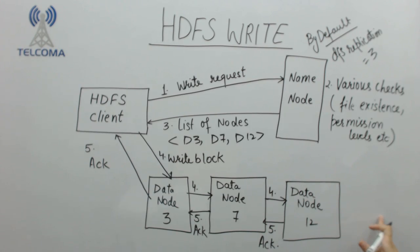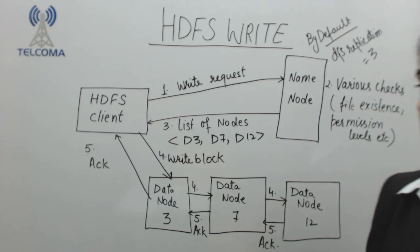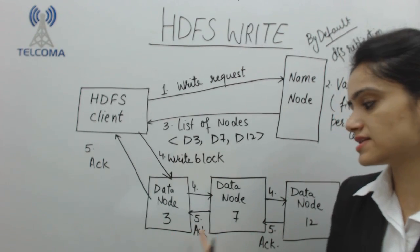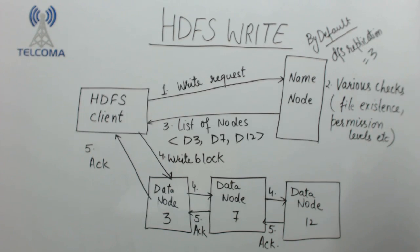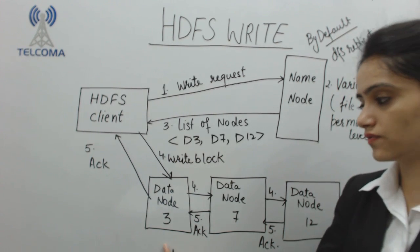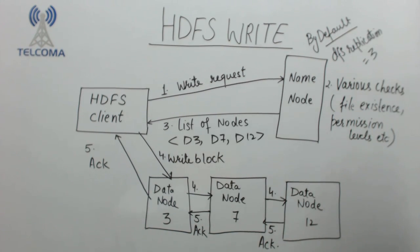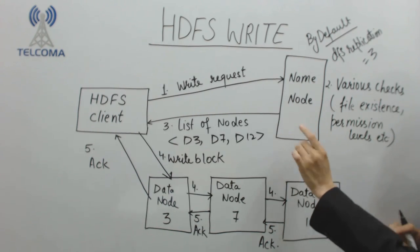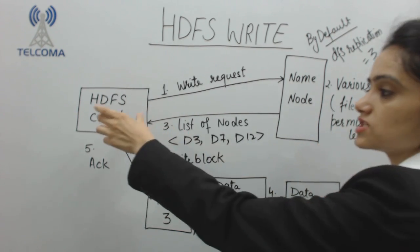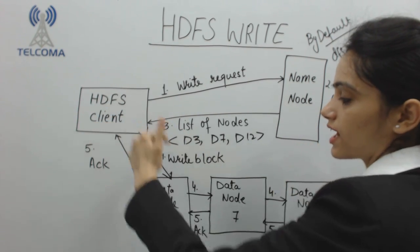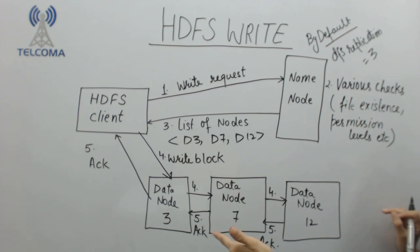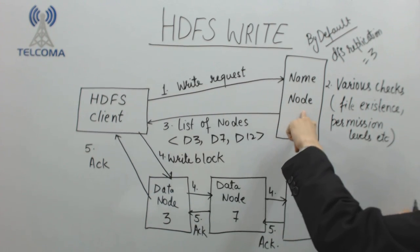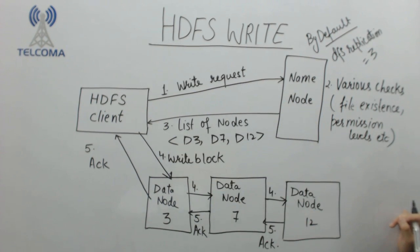This is the procedure for writing data on various data nodes. The controller or master unit is the name node, which is why the HDFS client that wants to write data must contact the name node first, and then the data nodes.